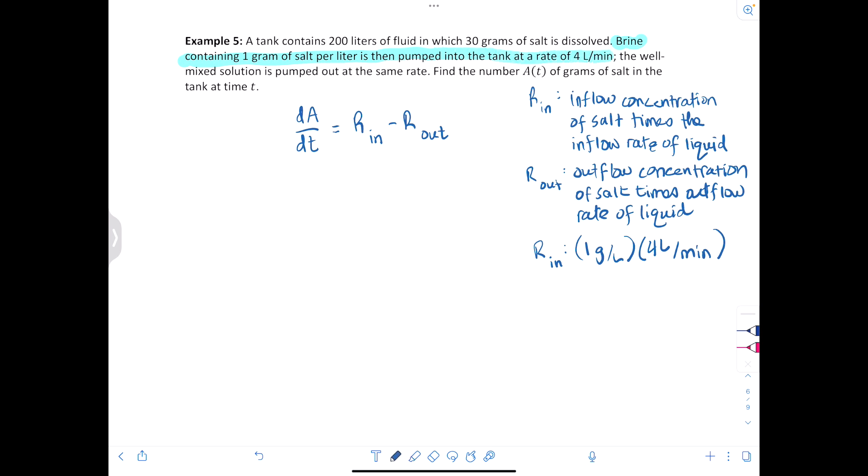And then the outflow, it's going at the same rate, right? And so we are looking at the outflow here. It's pumped out at the same rate, so basically that's where we get our variable. Okay, so you've got A(t) over 200, and that's in grams per liter. And the 200, just so you know, comes from here - the 200 liters of fluid is what it started with.